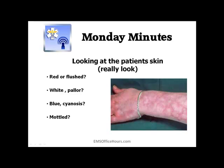When blood vessels supplying the skin become dilated, the skin will become warm and pink. When those same blood vessels constrict, or the patient's cardiac output drops, the skin is going to become pale and cool. If the patient doesn't get enough oxygen, you're also going to see the patient become cyanotic — that bluish color or even that dusky gray. Hypoxia or even narcotic overdoses can wind up desaturating the blood and causing that cyanosis.